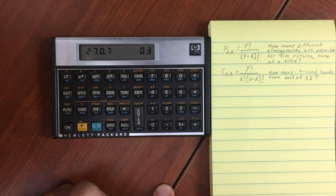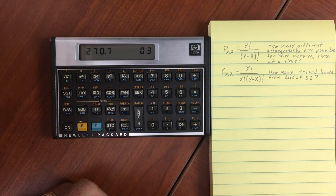There are over 270,000 different possible combinations of four-card hands dealt from a deck of 52.